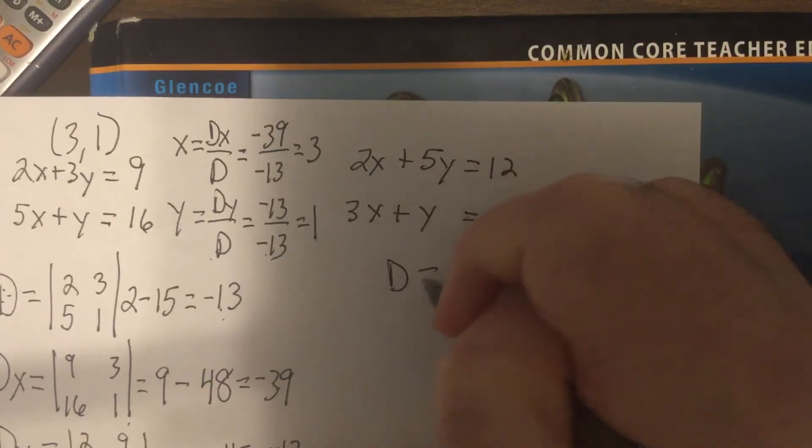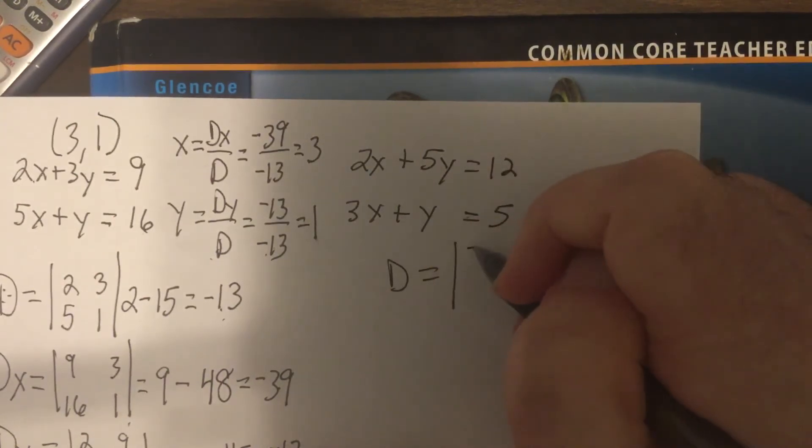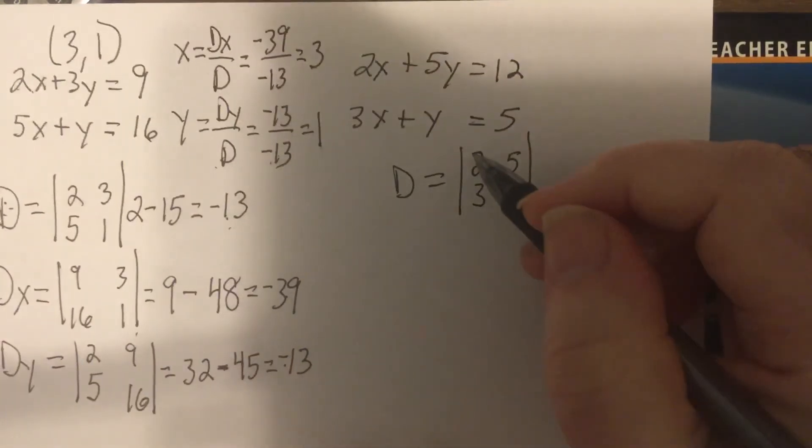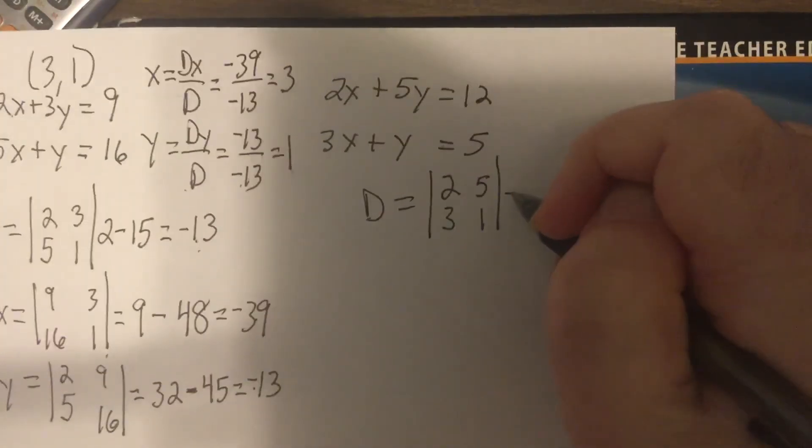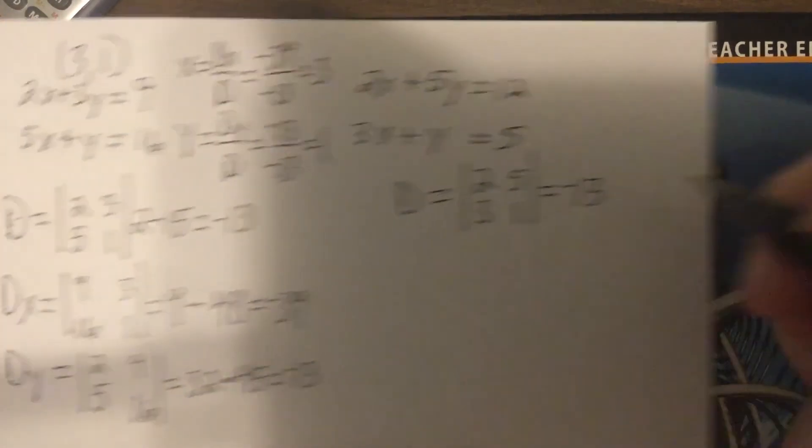D would be 2, 3, 5, 1. So it would be 2 minus 15 is negative 13.